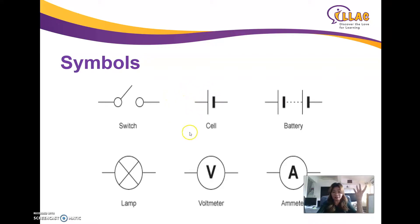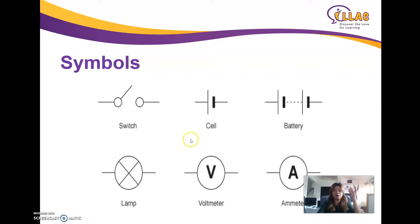What are the things that are involved in a circuit? There will be a cell, which is the battery, the source of energy. This is how a battery looks like. If you have multiple batteries, it will look like this.